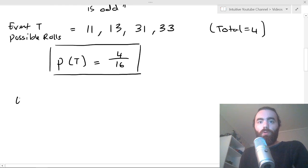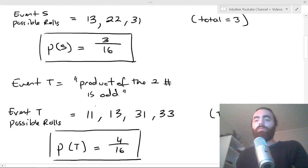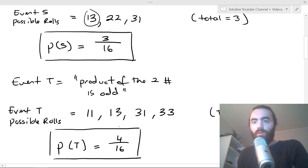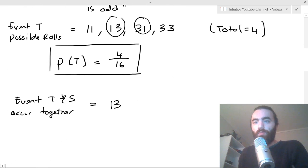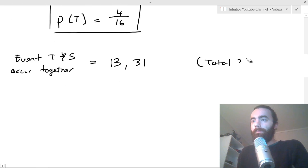So then we need to find what are the ways in which event T and S can occur together? That's if the sum of the two rolls is 4 and the product of those two rolls is also odd. Well, that's just going to be where they occur in both of these sets. So 1-3 occurs in both, and also 3-1 occurs in both. So the number of ways would be 1-3 and 3-1. That's when they both can occur in different rolls. So the total there is 2. So the probability of T and S occurring is going to be 2 over 16.